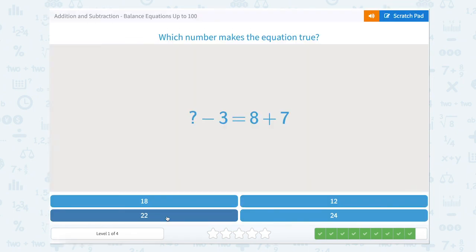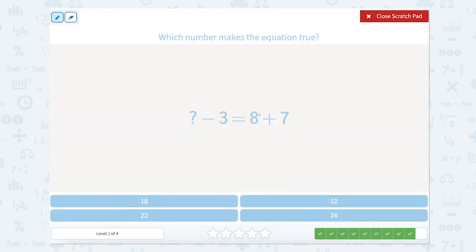And now we are on to our last one. Something minus 3 equals 8 plus 7. So we're looking at our two sides of the equal sign. 8 plus 7 is 15. So something minus 3 equals 15. I can always add that 3 to 15 to figure that out. So something minus 3 equals 15. 15 plus 3 is 18. So 18 minus 3 equals 15. So let's see if 18 is up here. It is. Let's close that scratch pad.